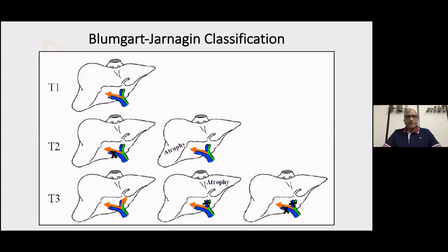T3 is basically bilateral disease — that's the Bismuth-Corlette 4 — or atrophy of the contralateral side. Contralateral side atrophy means there is no role for any surgical treatment. Bilateral vascular involvement, particularly of the contralateral hepatic artery combined with bilateral portal vein involvement, means the disease is too extensive to resect and reconstruct. This is a good working classification that we follow often, apart from the Bismuth-Corlette.